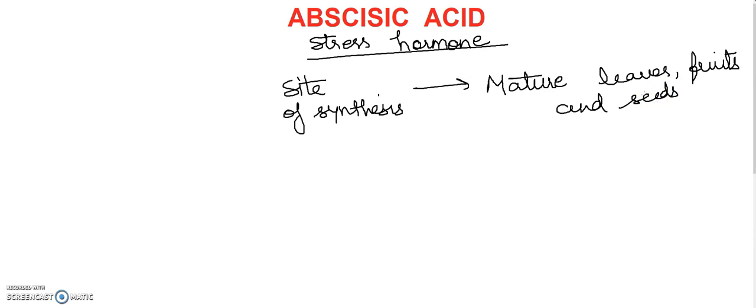Now let's talk about functions. First of all, I will tell you that abscisic acid is a growth inhibitor. Because when students are stressed, it inhibits the growth. And this name is abscisic acid. It causes abscission or you can say separation.